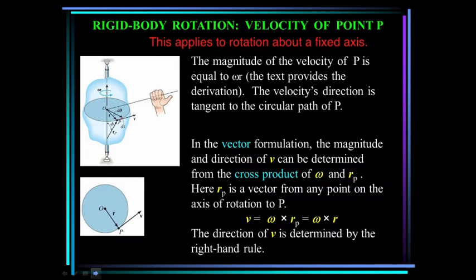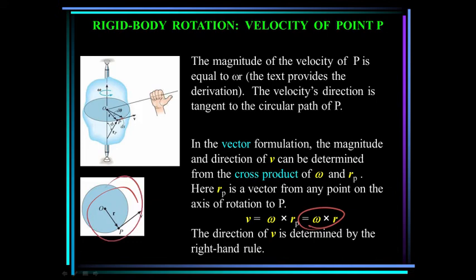In rigid body rotation, the velocity of any point is given by omega cross r, and it's always tangent to the path of motion.